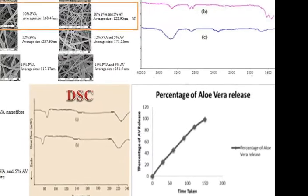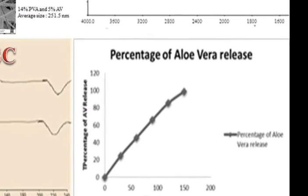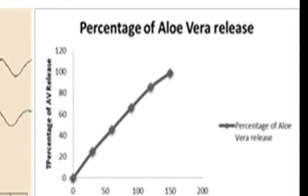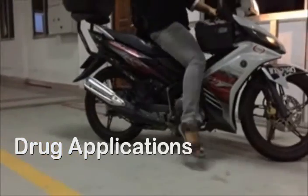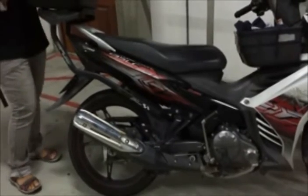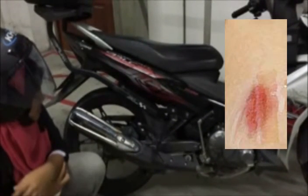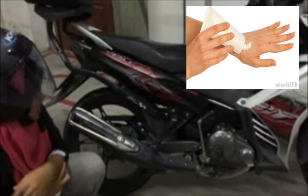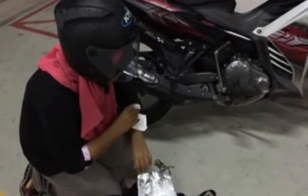The last result shows the release of aloe vera, which is a very promising membrane to act as wound healing. When this kind of injury occurs, as shown in the clip, instead of using cream to treat the wound, it is easier to patch the membrane directly on the skin.